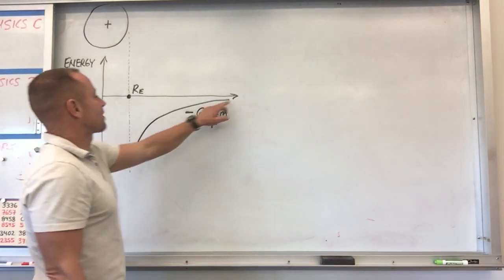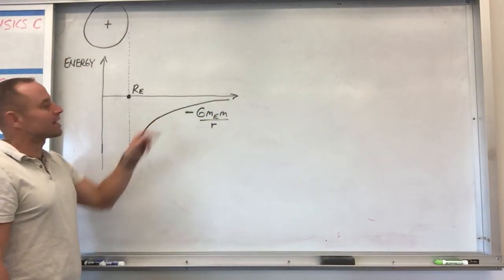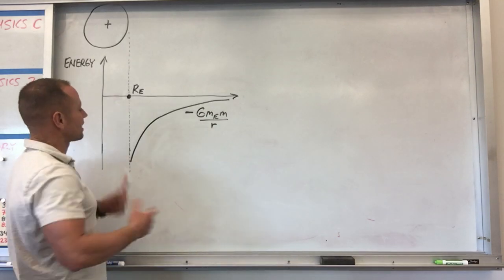So here's a graph of this gravitational potential energy, and let's try to get a handle on what this actually means by looking at a couple of examples.